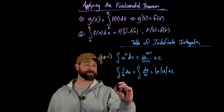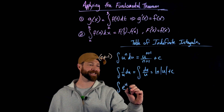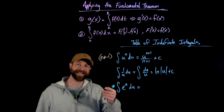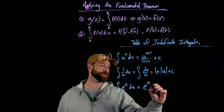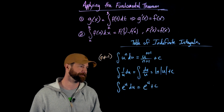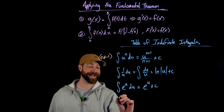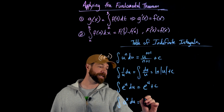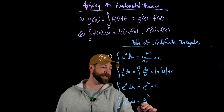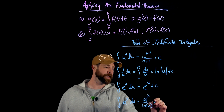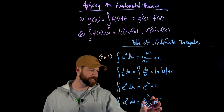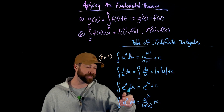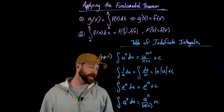The next example is both the easiest and the trickiest in application. If we take e to the u and integrate it, we just get e to the u plus c. Then if we integrate an exponential that is not base e, we get nearly the same thing — we get a to the x, but we have to divide by the natural log of a. That's because when we differentiate a to the x, we get out this factor of the natural log of a, and that will cancel it out.